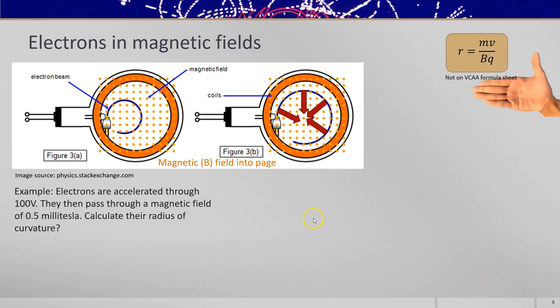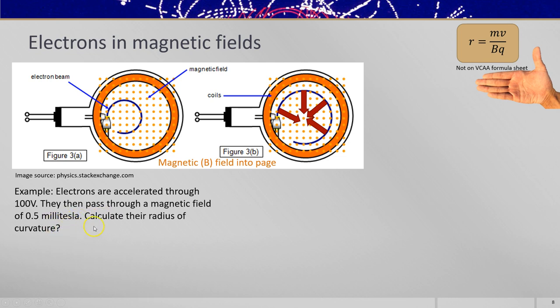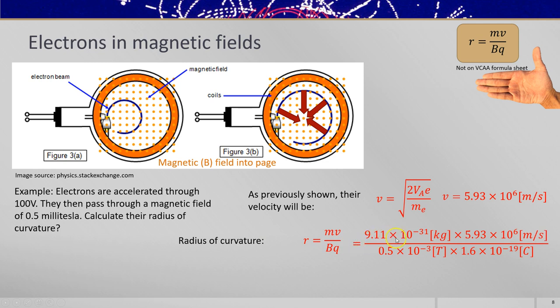We can use that in an example here to find out what the radius of curvature would be of electrons accelerated through 100 volts as they pass through the magnetic field of half a millitesla. So firstly, you need to work out the velocity, which we've done before. So there's the same velocity that we've used in the previous questions. Radius of curvature, we'll use the formula, substitute in the mass of the electron, the velocity, the magnetic field strength in millitesla, so multiplied by 10 to the minus 3, and the charge of the electron to give a radius of about 6 or 7 centimeters.